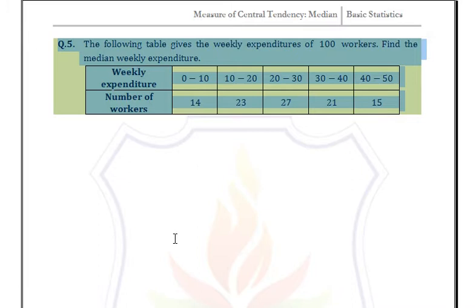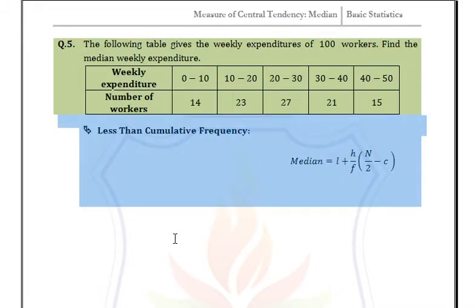Now here we have a frequency distribution in grouped form. For grouped form, we have two formulas. For less than cumulative frequency, the median is: L + (H/F) × (N/2 − C).